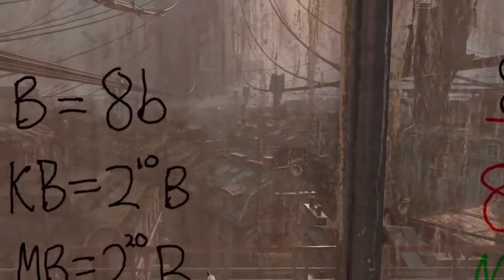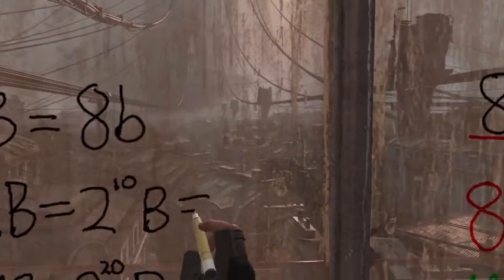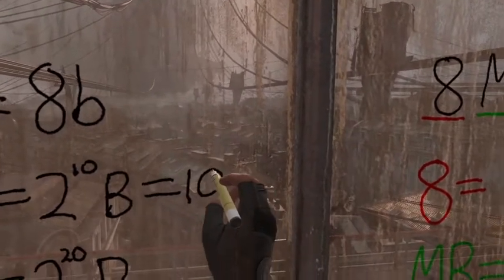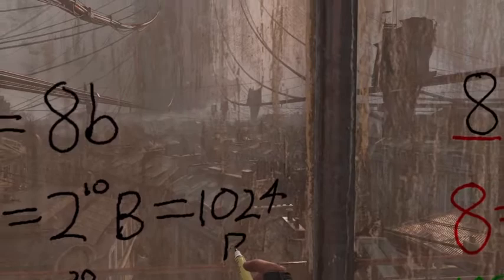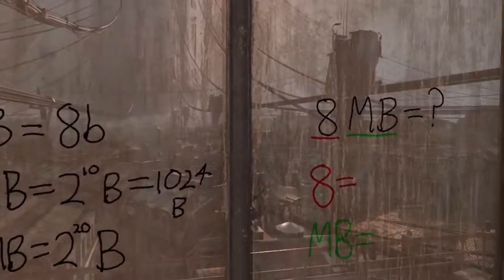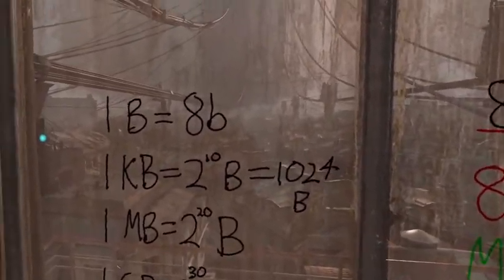Now, you may see, instead of 2 to the 10, you may see the value 1,024 bytes. These two values are equivalent. 2 to the 10 is equal to 1,024.